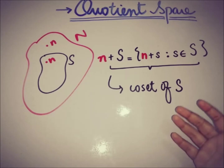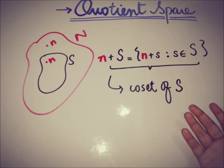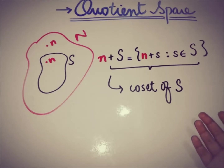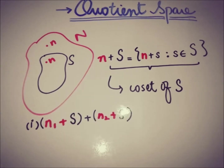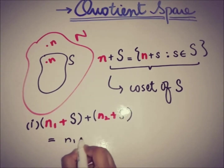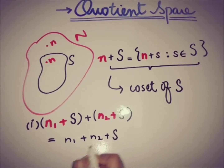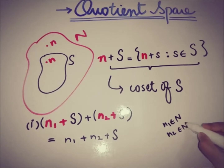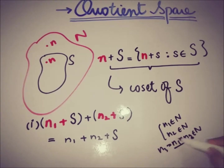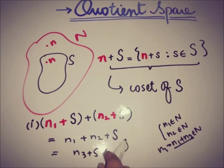This coset is a linear space under addition and scalar multiplication. For addition: if we take two elements from that coset, we can write it as n1 plus n2 plus S. Because N is a normed space, if n1 belongs to N and n2 belongs to N, their sum n3 = n1 + n2 is also in N. So this gives n3 plus S, which belongs to the coset under study.